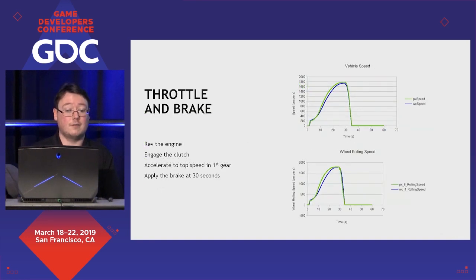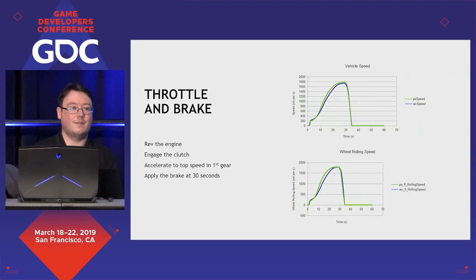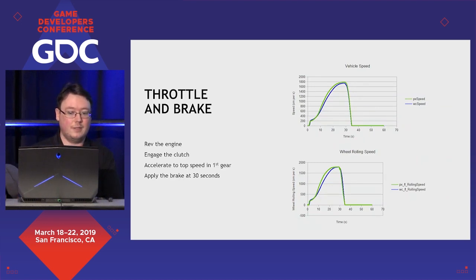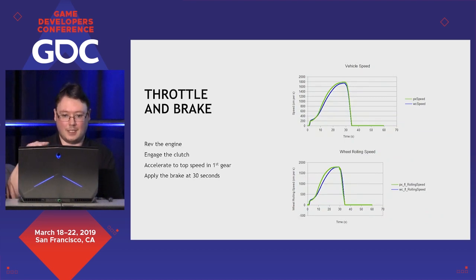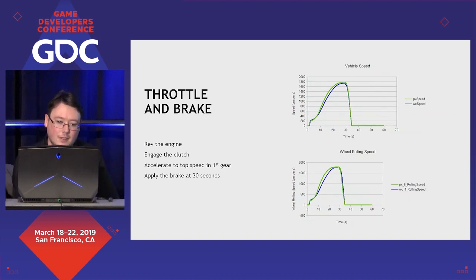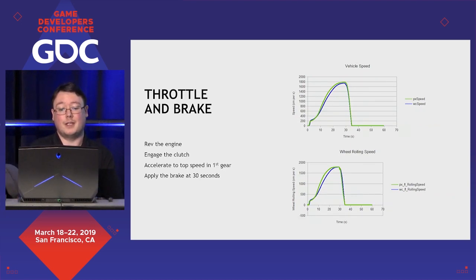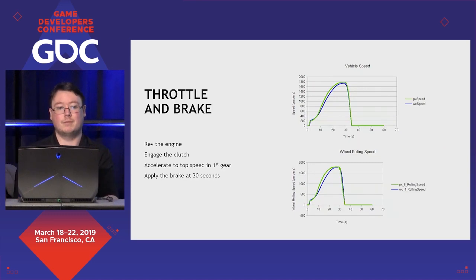The first test is throttling and braking. We rev the engine, engage the clutch, and accelerate to the top speed that first gear can achieve. Then at 30 seconds we apply the brakes. The green line is PhysX and the blue line is our reference model. PhysX matches very closely for about the first seven seconds, and then once it gets past the hump in the torque curve, it accelerates slightly faster than the reference — but it's very, very close. The values are in centimeters per second, and we're extremely close. The braking behavior is almost exactly the same. The top graph shows vehicle speed and the bottom shows wheel rolling speed, which are obviously very closely related.